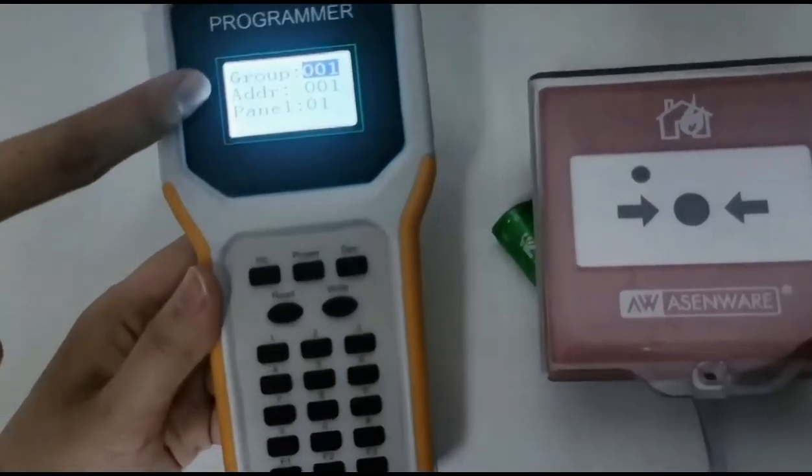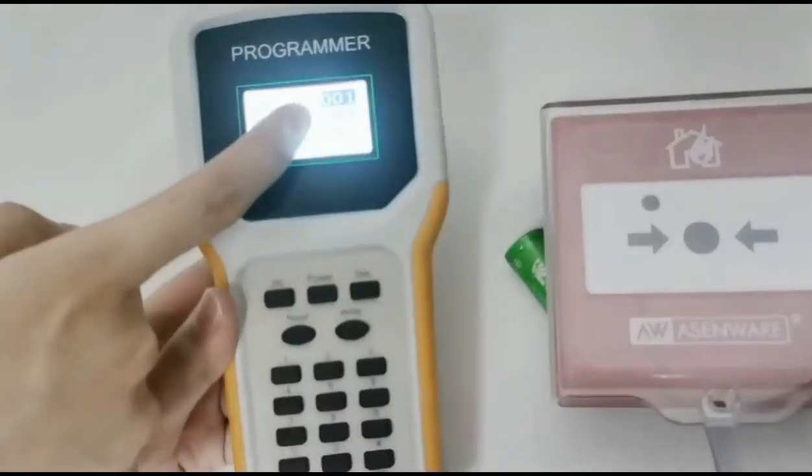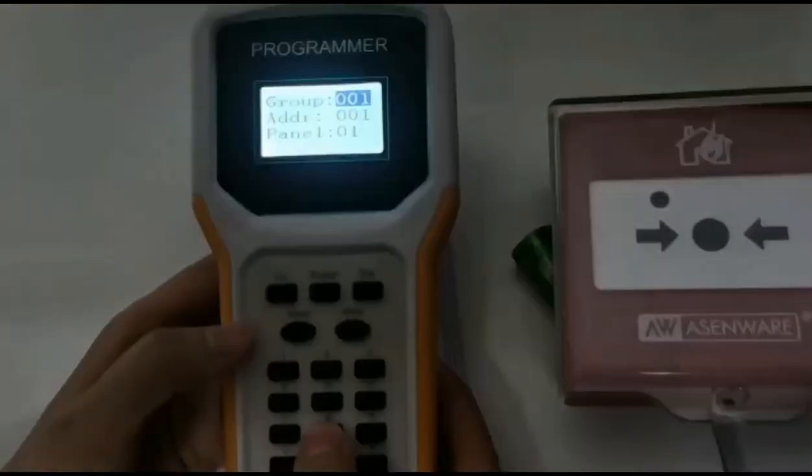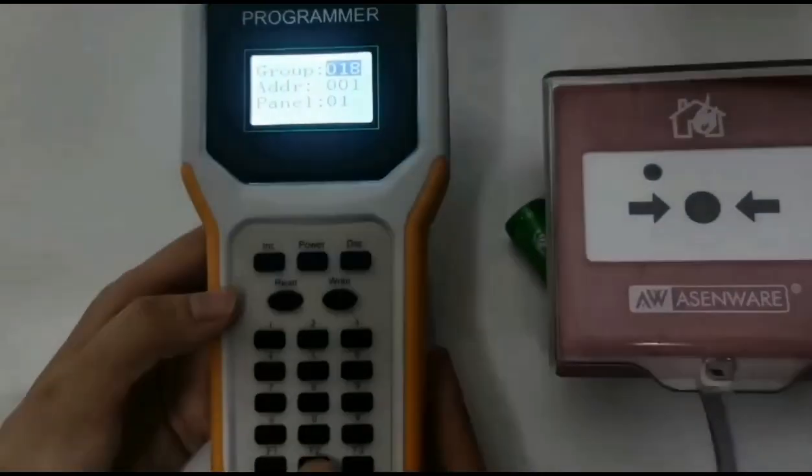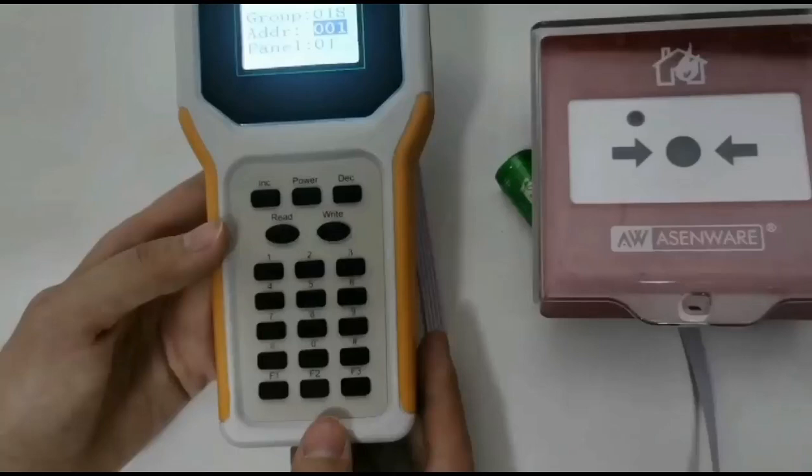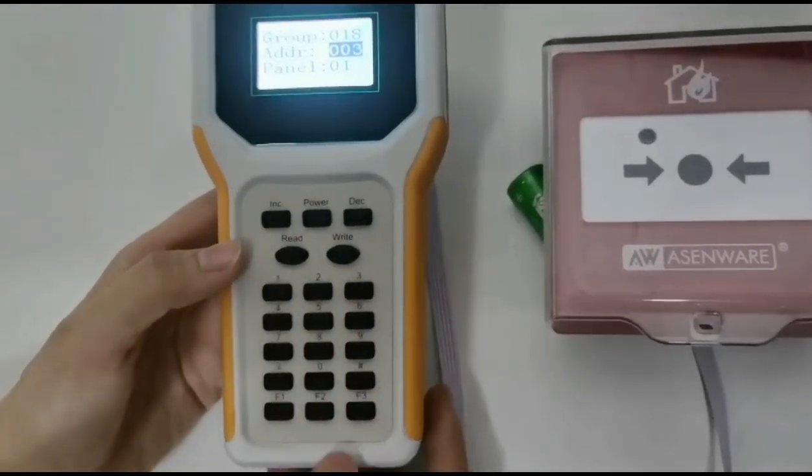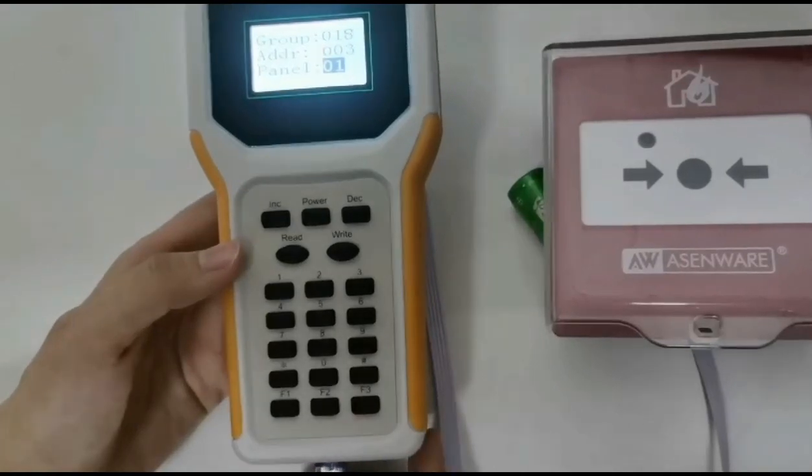Now we start to code. We choose group as 18, set address as 003, and choose panel as 01. Then we press right.